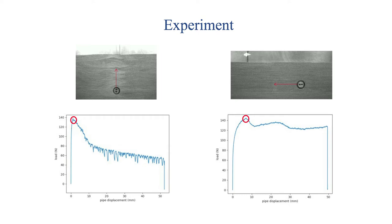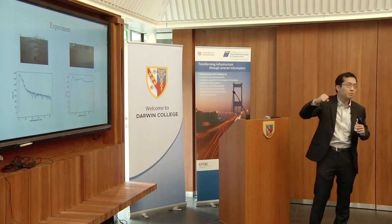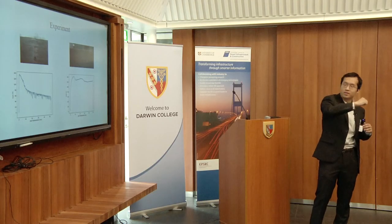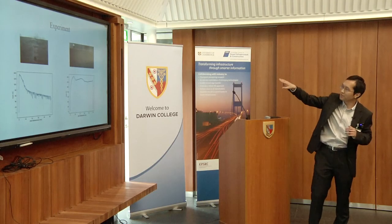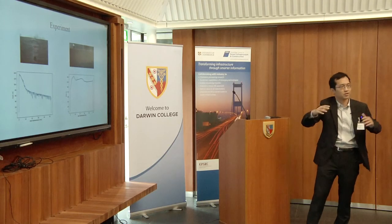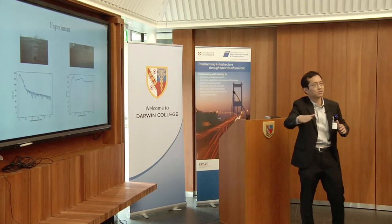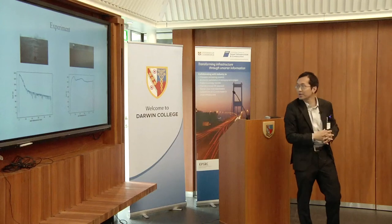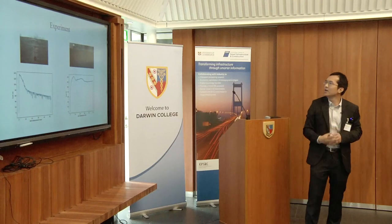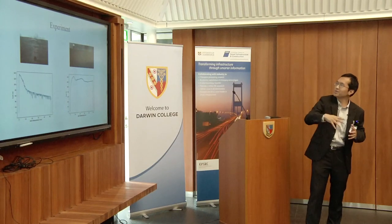When the pipe is moving upward, you can see there is a peak load, and the force reduces as we increase the pipe movement. When we move the pipe horizontally, there are several peaks, because different failure surfaces develop up to the ground surface.